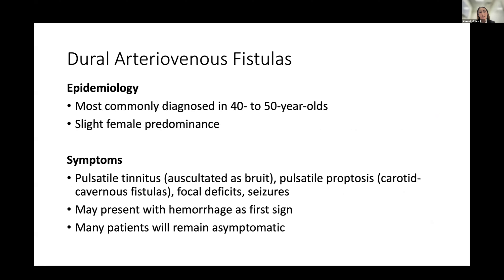Dural AV fistulas are most often diagnosed in patients who are about 40 to 50 years old, and there is a slight female predominance. Patients typically present with pulsatile tinnitus as one of the most common symptoms, which clinically may also be heard as a bruit. Patients with carotid cavernous fistulas can also present with pulsatile proptosis, focal deficits, or seizures. A number of patients present with hemorrhage as their first sign, while many others remain asymptomatic with lesions identified incidentally.